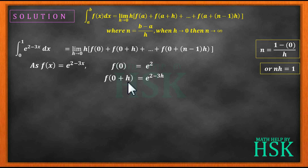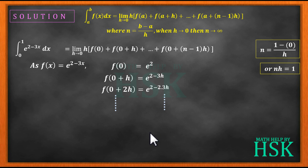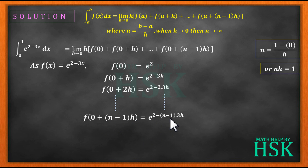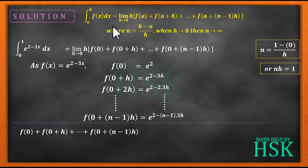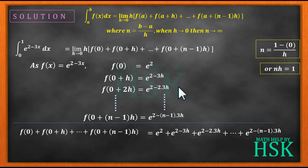Similarly, f(0+h) is equal to e to the power of 2 minus 3h; f(0+2h) is equal to e to the power of 2 minus 2 times 3h; and so on up to the last value f(0+(n-1)h) equals e to the power of 2 minus (n-1) times 3h. On totaling all these, I get the sum of all these values.